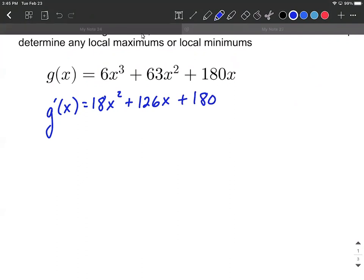Now that we've taken the first derivative, we need to figure out when does this derivative equal 0. So to figure out when it's going to equal 0, let's try to do some factoring and use the zero product property. Now all of these terms have an 18 in common, so let's first factor out the 18.